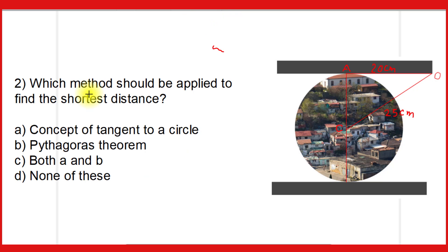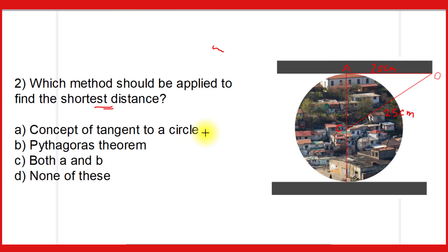Now the second question: which method should be applied to find the shortest distance? The four options are: one, the concept of tangent to a circle; two, Pythagoras theorem; three, both A and B; four, none of these. We used the concept that the radius is perpendicular to the tangent, so we applied the tangent concept. Then we applied the Pythagoras theorem. Therefore both A and B are the methods used, and option C is the correct answer.